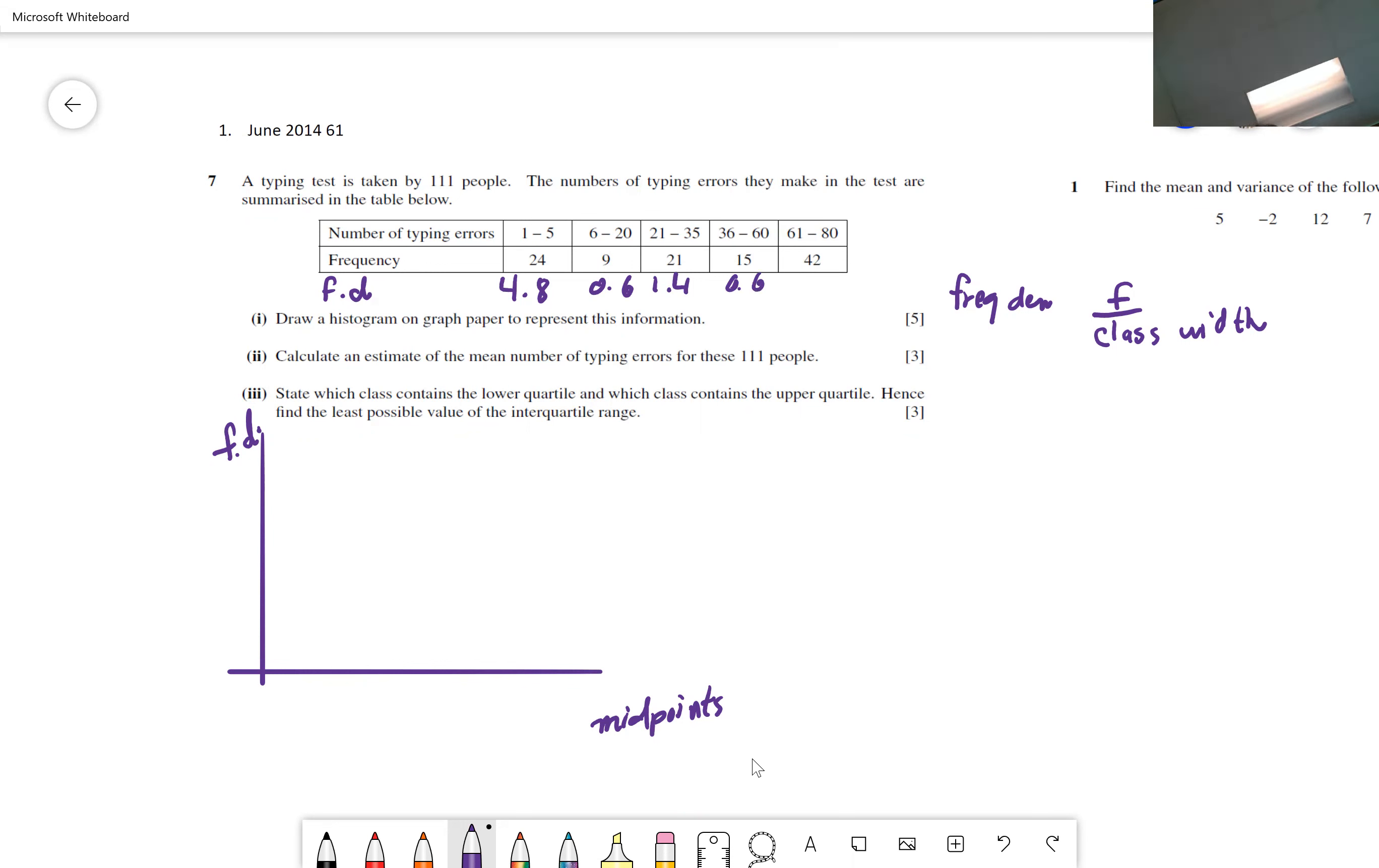So look at the next one. 36 minus 21 is 15, right? Or you could do 35 minus 21 and add one is 15. So 21 divided by 15, that's 1.4. And the next one, the class width for the next one is 25. 15 divided by 25 is 0.6. And the last one, the class width is 20, 42 divided by 20.